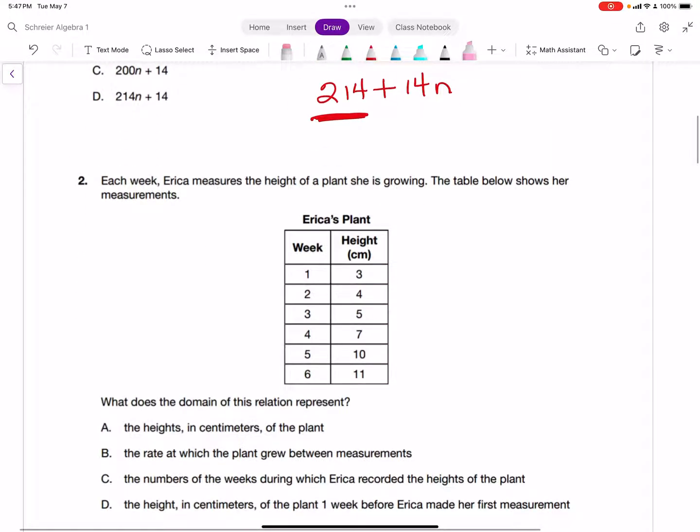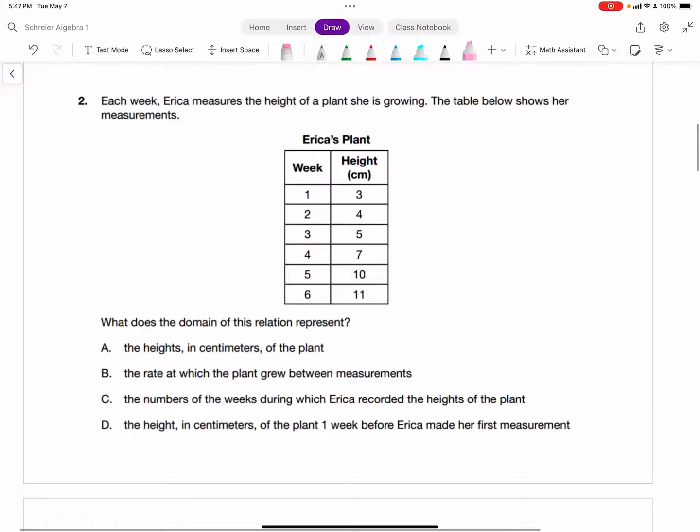For problem number two, we have Erica. Each week, she's going to measure the height of a plant she is growing. The table below shows her measurements. We can see Erica's plant in week 1, 2, 3, 4, 5, through 6. And then the height in centimeters is 3, 4, 5, 7, 10, and 11.